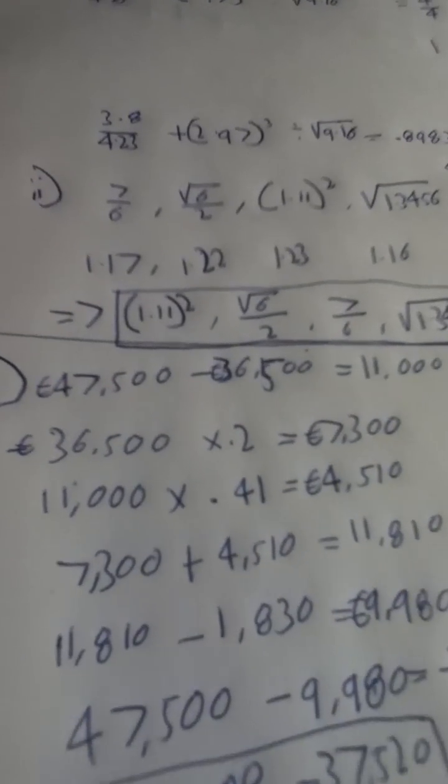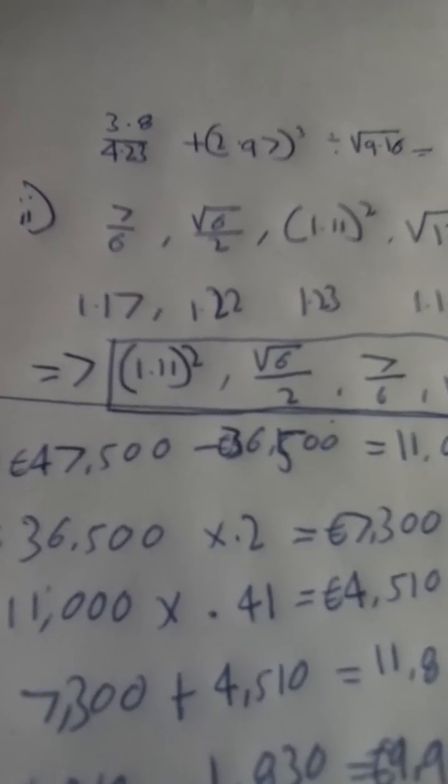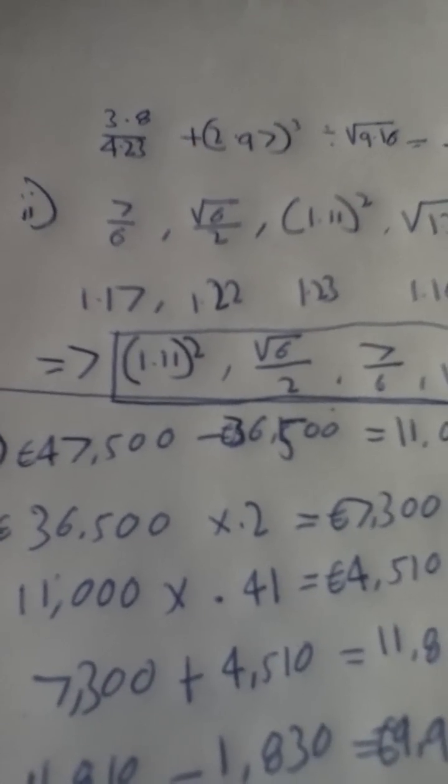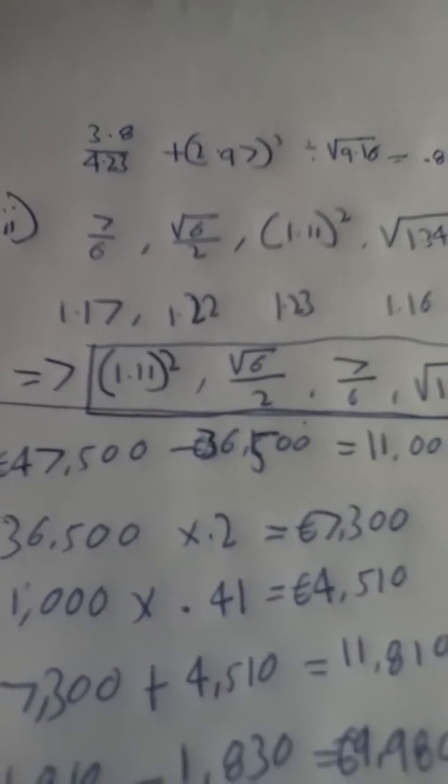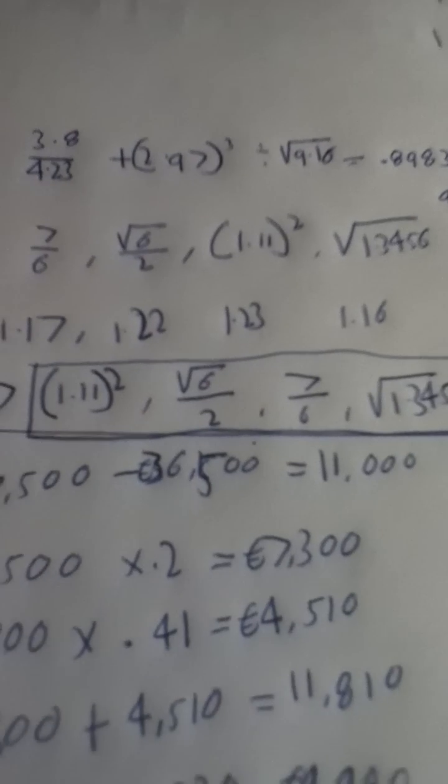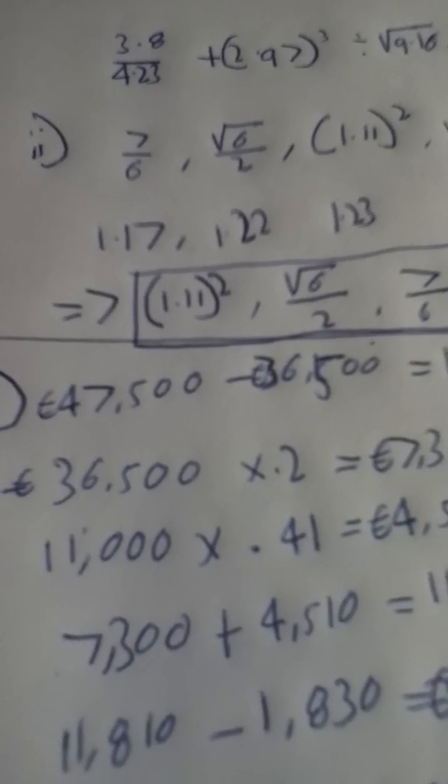And for part C you are asked about income tax. So 47,500 is Aisling's gross income. And if you take 36,500 from that standard rate cut off point you get 11,000 and that's the amount she pays at the higher rate of 40%. So at the lower rate she pays 36,500.